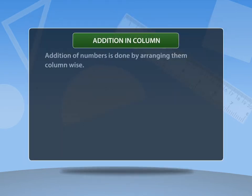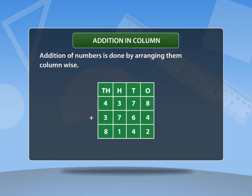Addition of numbers is done by arranging them column wise. Always start adding from the ones place and then add tens, then hundreds, thousands, and so on.